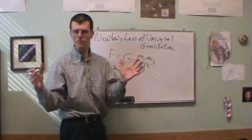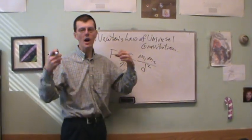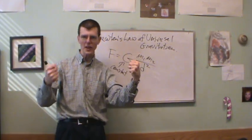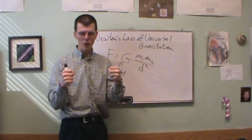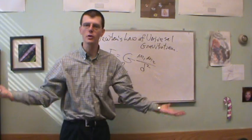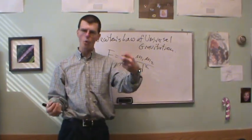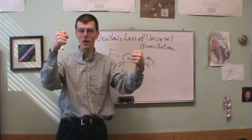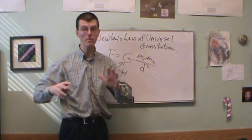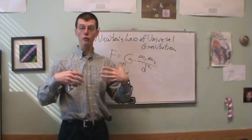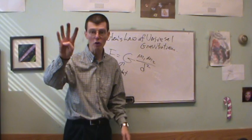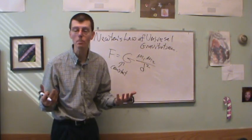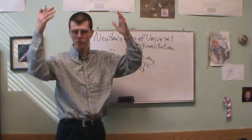The force depends on the product of the masses. Newton says there's a force of gravity attracting my left hand toward my right hand right now. If you doubled the mass of everything in the universe, this mass would be twice as much and that mass would be twice as much, so the force of gravity would be four times more — it goes up by a factor of four.